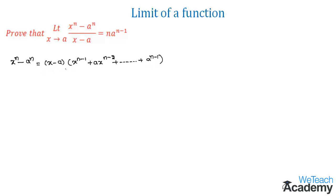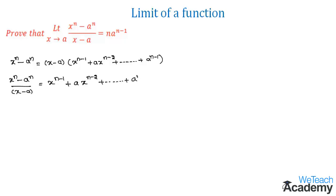Now let us transfer x minus a to the left hand side. So we get x power n minus a power n divided by x minus a is equal to x power n minus 1 plus a x power n minus 2 plus so on plus a power n minus 1. Now let us apply the limit x tends to a on both sides of this equation.